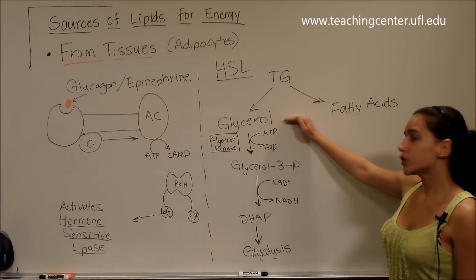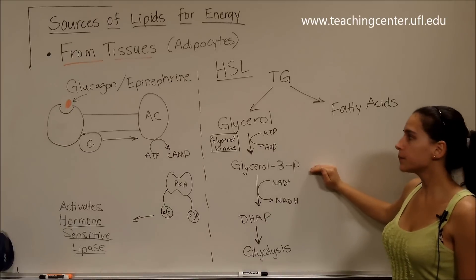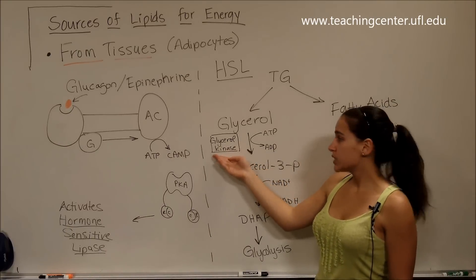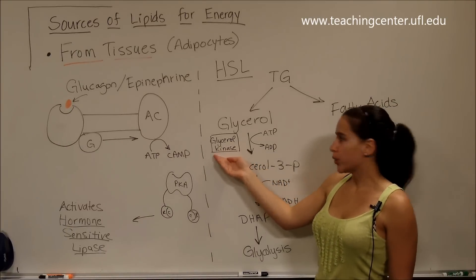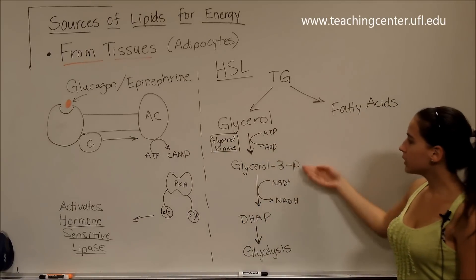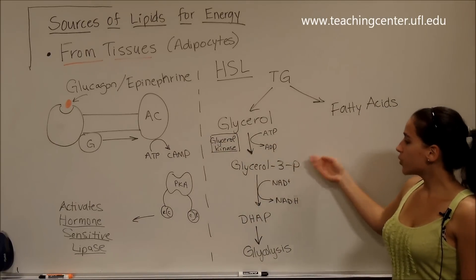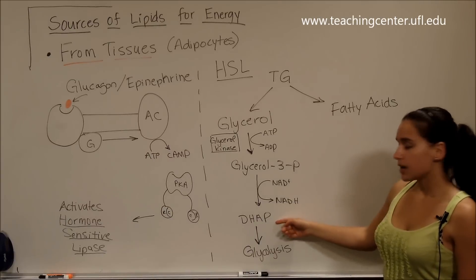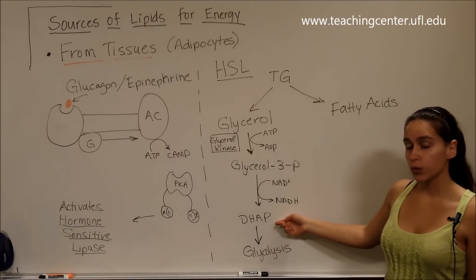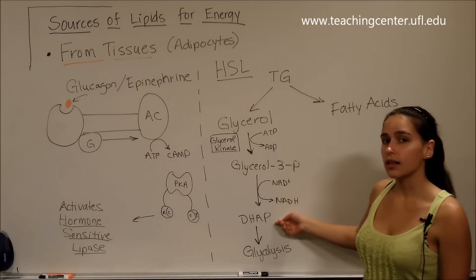Glycerol is going to be phosphorylated into glycerol-3-phosphate by glycerol kinase. Since this is a kinase, we know that it's going to use ATP. Glycerol-3-phosphate is then going to be oxidized into dihydroxyacetone phosphate, which we have seen in glycolysis.